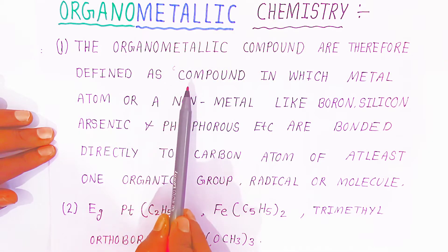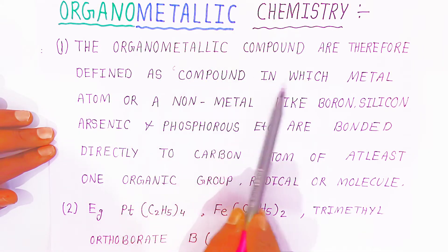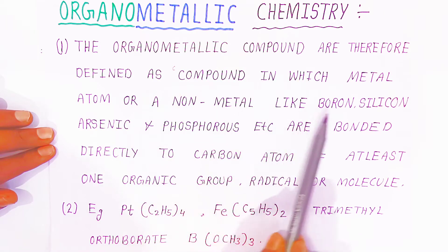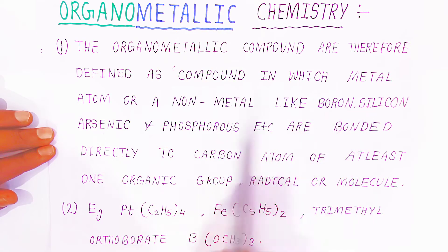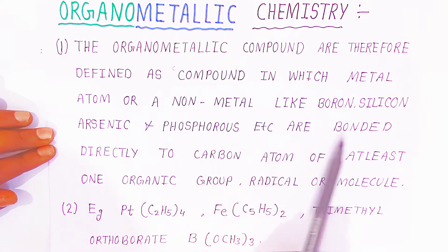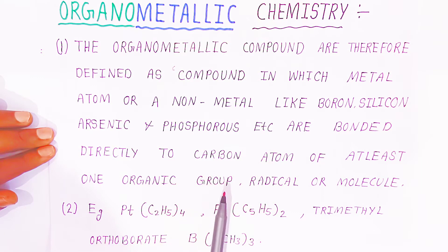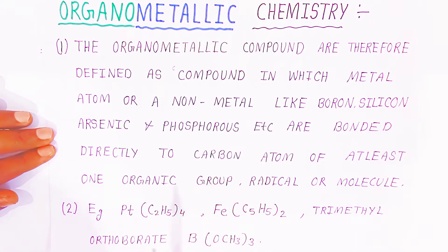To restate the definition: compounds in which metal atoms or non-metals like boron, silicon, arsenic, or phosphorus are bonded directly to the carbon atom of at least one organic group, radical, or molecule are called organometallic compounds. Let's now look at some examples.